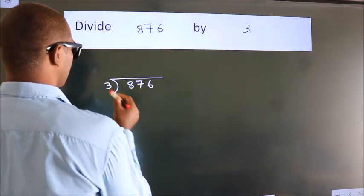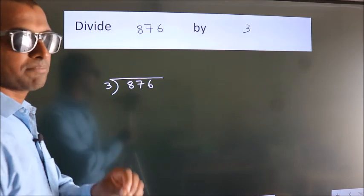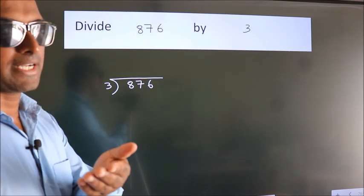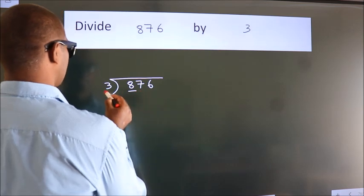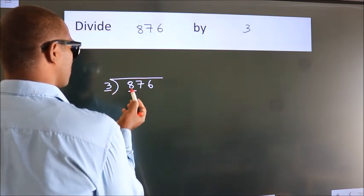3 here. This is step one. Next, we have 8. In the 3 table, a number close to 8 is